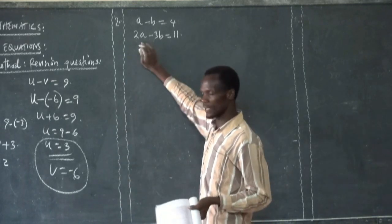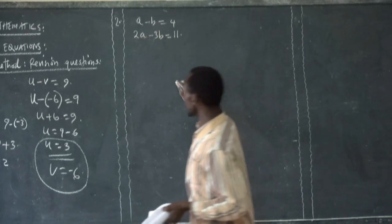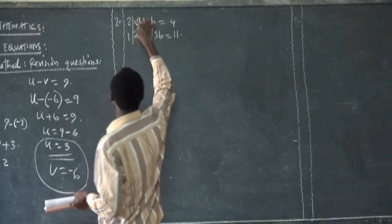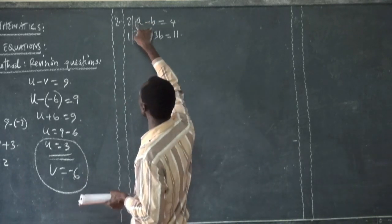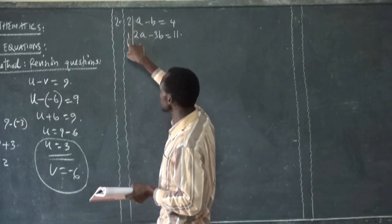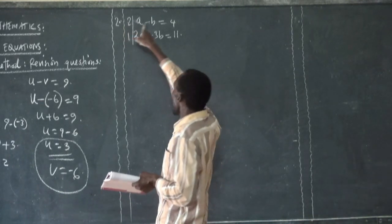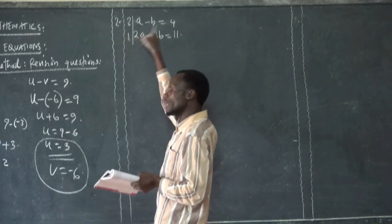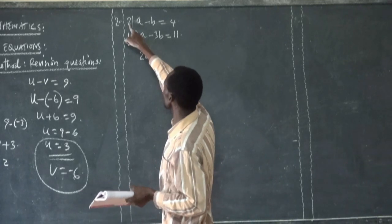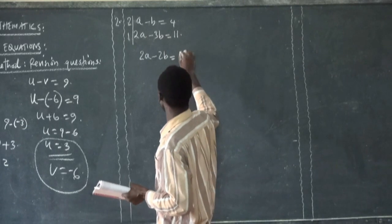We choose one of the letters and then interchange. Interchanging means: where there is 2 in the second equation, you write 2 here; and the 1 from the first equation is written there. Then you multiply those numbers throughout the equation. So 2 times A gives 2A; 2 times negative B gives negative 2B; 2 times 4 gives 8. Then the second equation remains: 2A minus 3B is equal to 11.